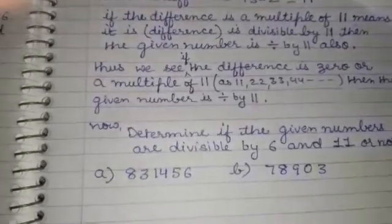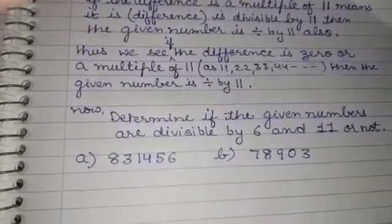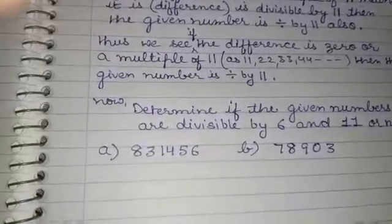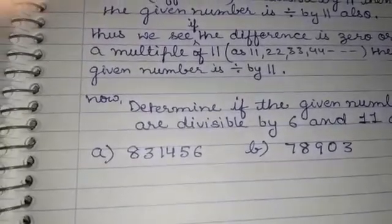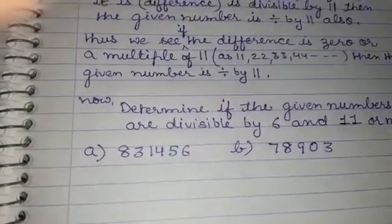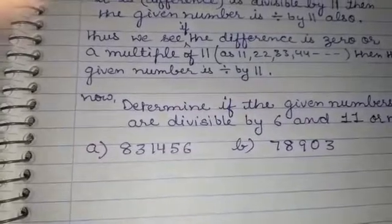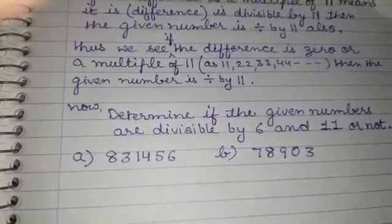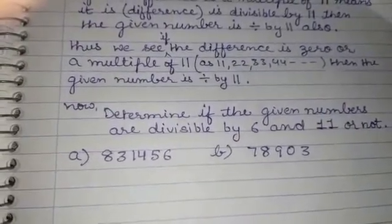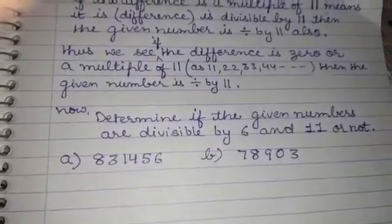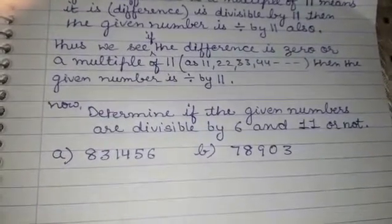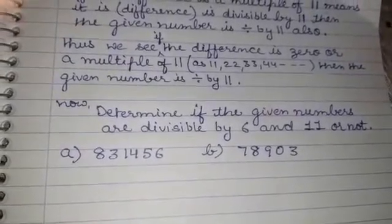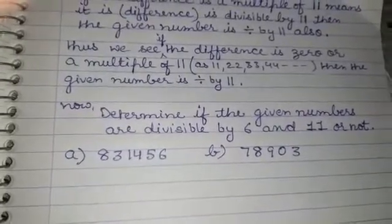Now I am giving you 2 numbers. You will find out whether the given numbers are divisible by 6 and 11 or not. The first number is 831456 and the second number is 78903. Write down the divisibility rules of 6 and 11 in your fair notebook, then solve these problems using those rules to find out if the given numbers are divisible by 6 and 11 — yes or no. Thank you so much, I'll see you next time.